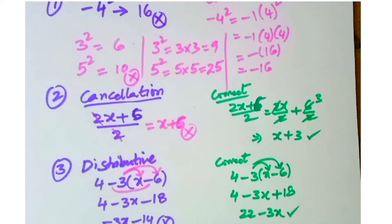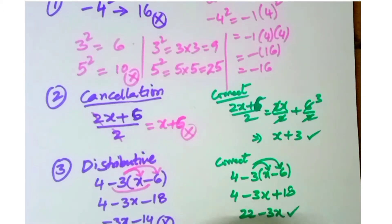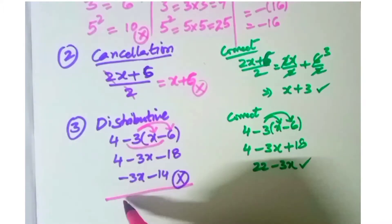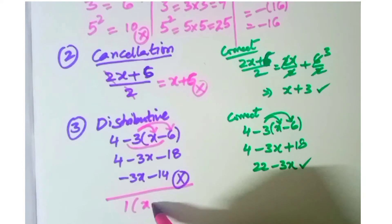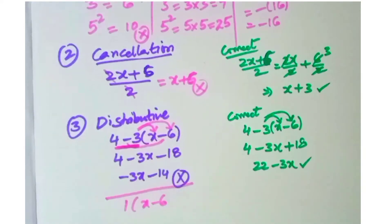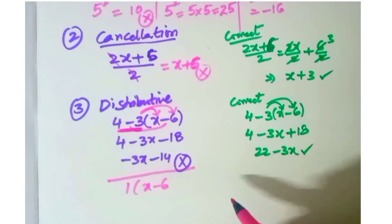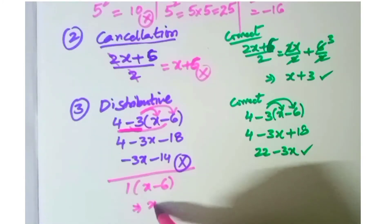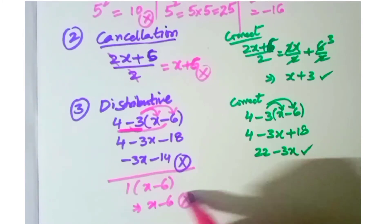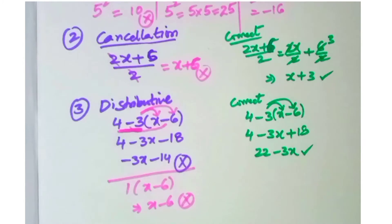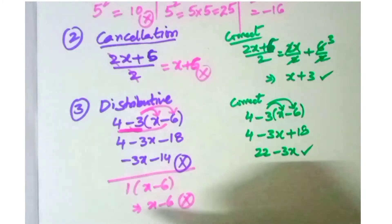The same problem is also done incorrectly another way: four minus three into x minus six, where students just write x minus six as the answer without distributing. That is also wrong. This is the correct process. Moving on to the fourth error.